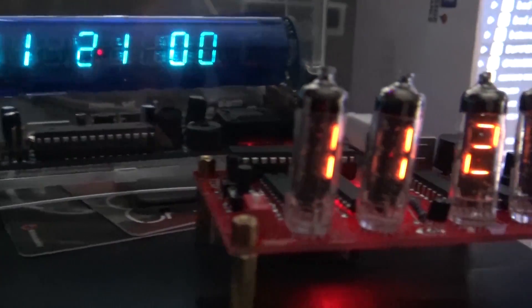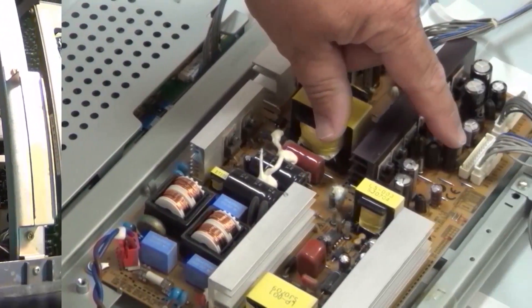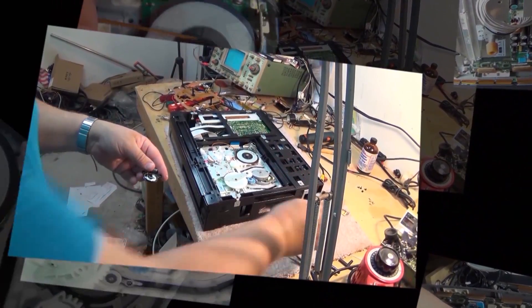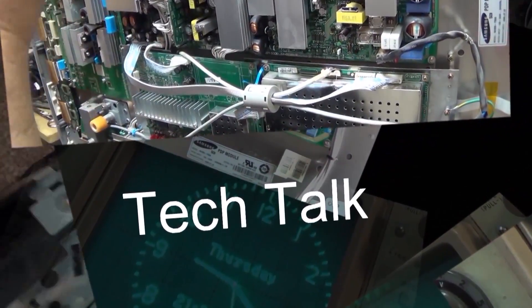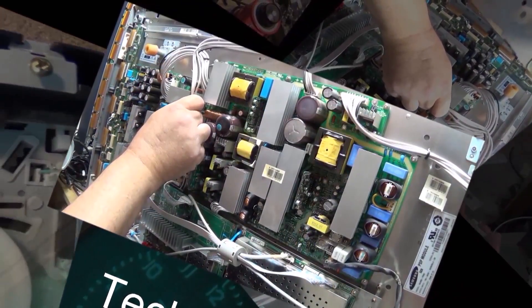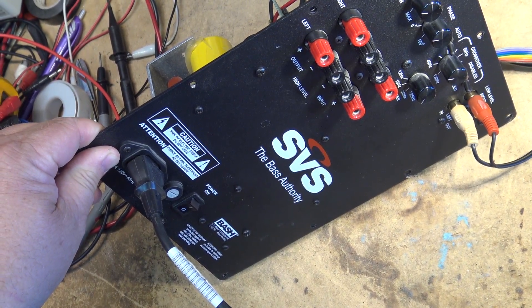I'm going to call this short video Odds and Ends, where we're going to look at a plate amp and get another look at that old 1940 Philco radio. Let's check it out. Today I'm working on an SVS Bash amplifier from a subwoofer.